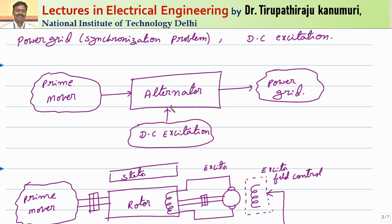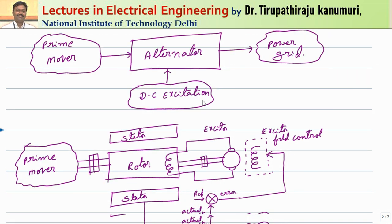The alternator also has a DC excitation system. So the excitation is going to have an effect on the alternator and vice versa. Similarly, the alternator is connected to the power grid, which is associated with stability problems because you have to synchronize your alternator with the power grid. Synchronization will be lost if the alternator is having some problem, so stability and synchronization must be taken care of.